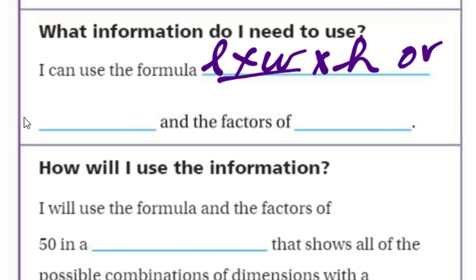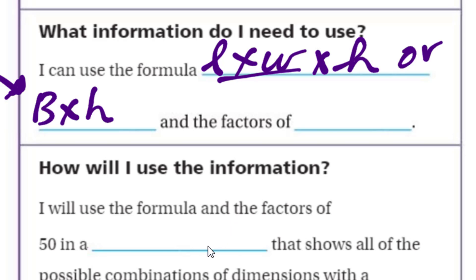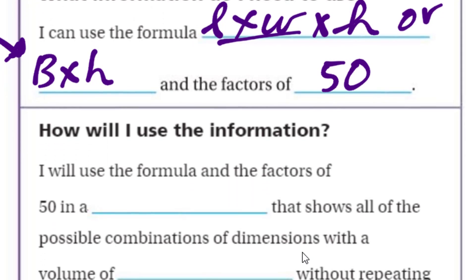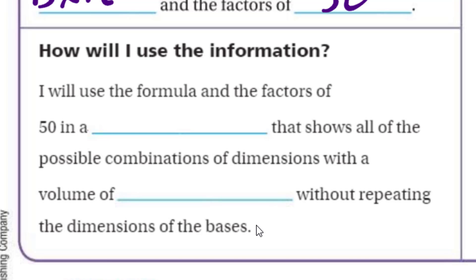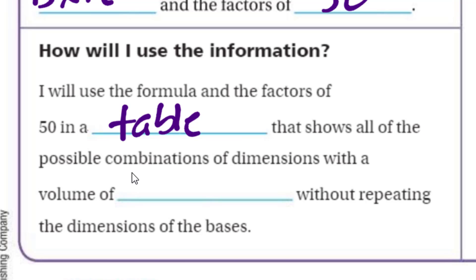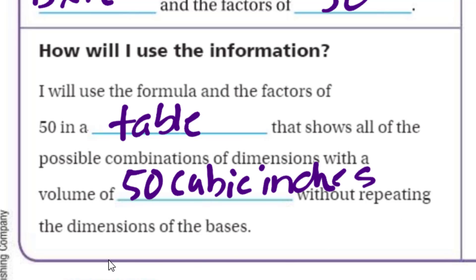Or base times height — that's a strange one though. Just use the full one. And the factors of 50 because we're trying to do 50 cubic inches. How will I use this information? I will use the formula and the factors of 50 in a table that shows all of the possible combinations of dimensions with a volume of 50 cubic inches, without repeating the dimensions of the bases, because we want them to look different.